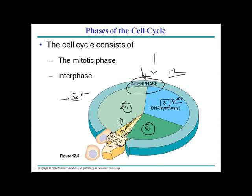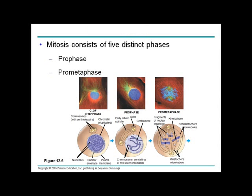In the mitotic phase, there are five distinct phases that make the cell divide. All cellular events that are purely visible by light microscope occur in the mitotic phase — including nuclear membrane breakdown, chromosome arrangement at the metaphase plate, and division. The five phases are: prophase, pro-metaphase, metaphase, anaphase, and telophase.